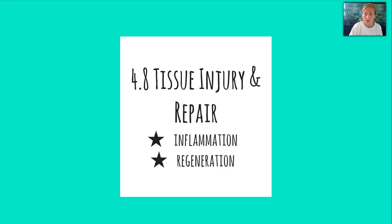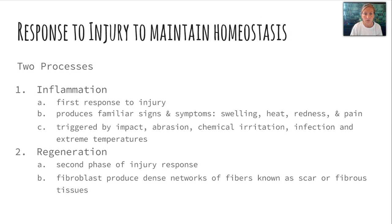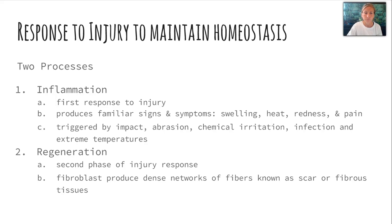Now, tissue injury and repair. We normally see two things happen: inflammation and then regeneration. Inflammation is the first response to injury and produces familiar signs — swelling, heat, redness, and pain. It's triggered by impact, abrasion, chemical irritation, infection, or extreme temperatures. The second phase is regeneration, if possible depending on the tissue type. Fibroblasts usually produce dense networks of fibers which build up scar tissue, also called fibrous tissue, which can change over time but is usually distinguishable from the original tissue being replaced.